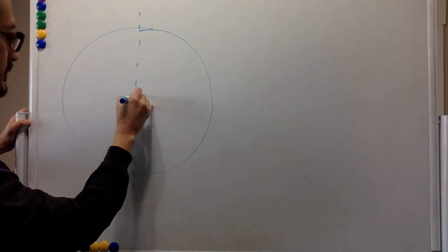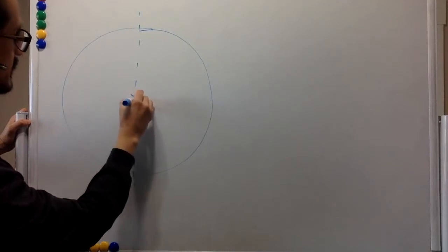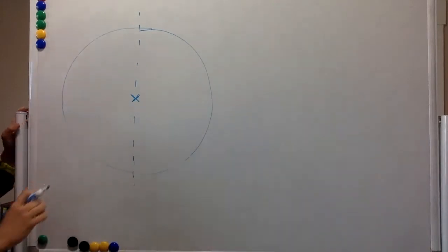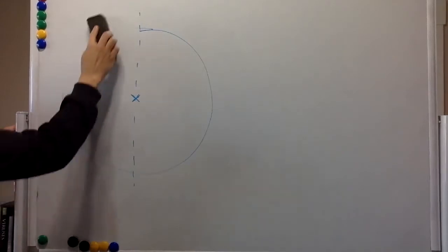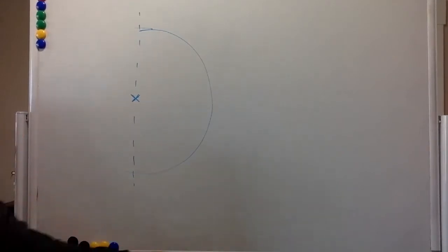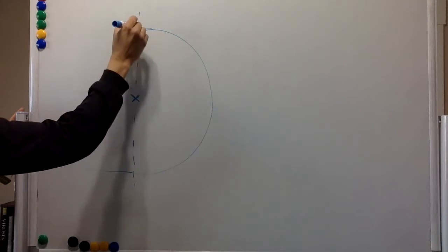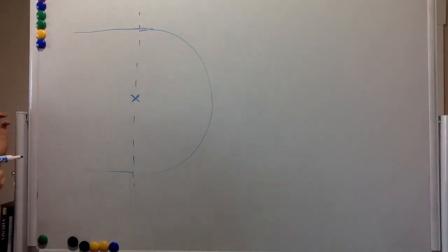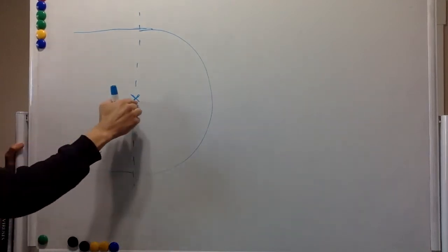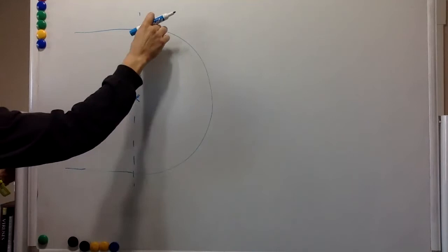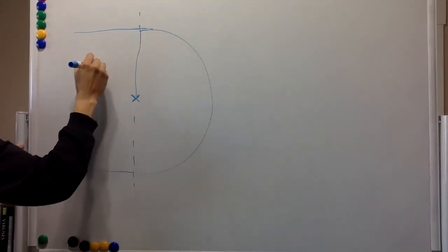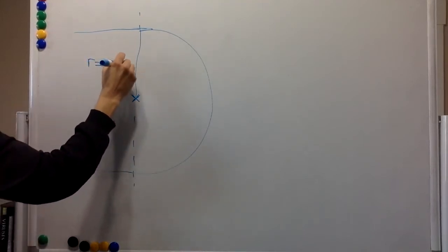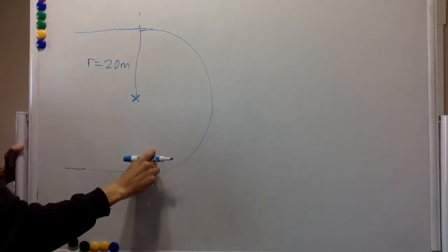So the center of this circle is about here. And it is a semicircle. So this one here will continue over here in this direction. The center of the circle is here, and the radius of curvature is 20 meters.